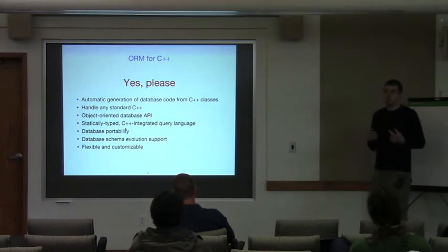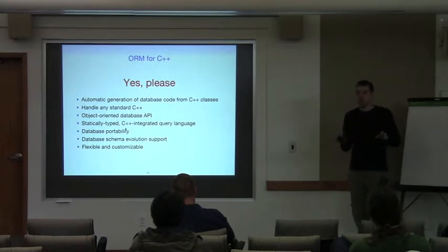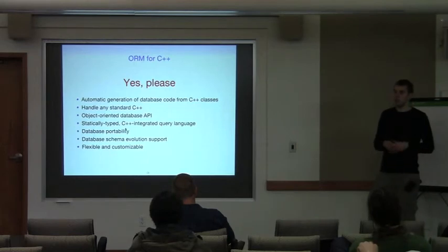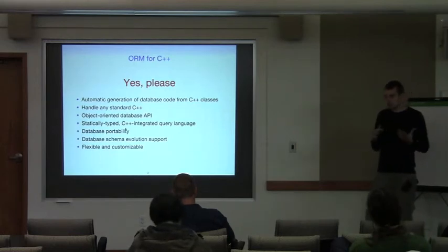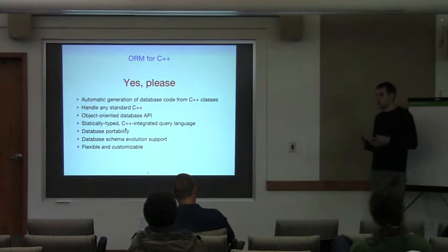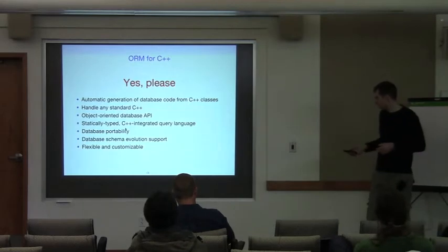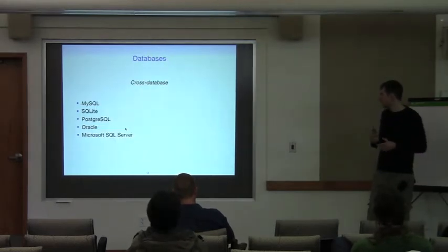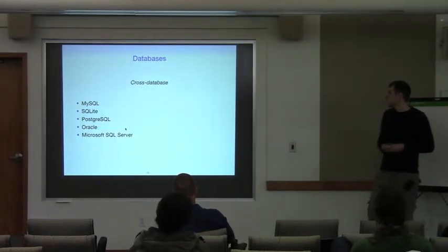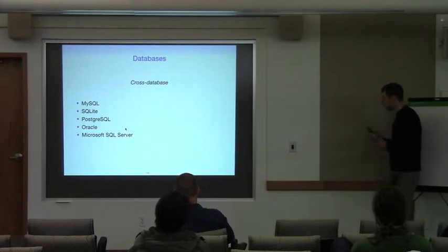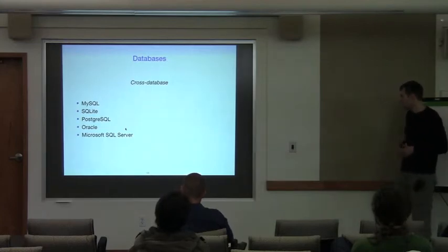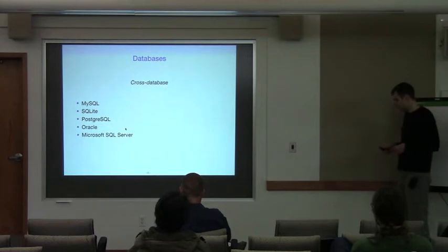ODB is very flexible and customizable. It can either completely hide the relational nature of the underlying database or expose some of the details as required. At the extreme, ODB can be used as just a convenient way to extract data from query results. Currently ODB supports MySQL, SQLite, PostgreSQL, Oracle, and Microsoft SQL Server.